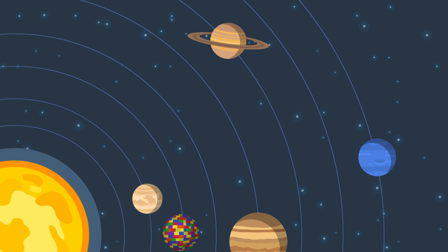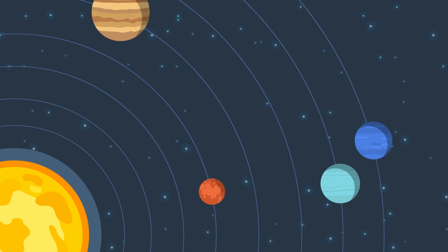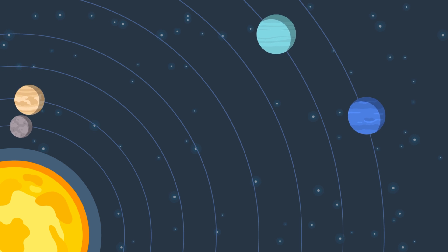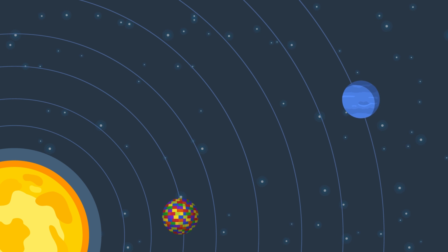You might worry that replacing the Earth with a Lego Earth would have a catastrophic effect on our orbit, but fear not. The new planet Lego can orbit the sun just like any other body in the solar system.